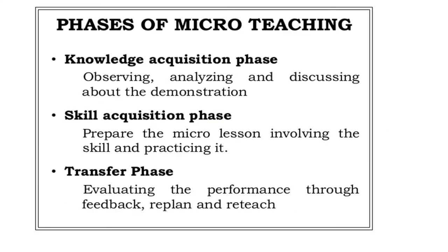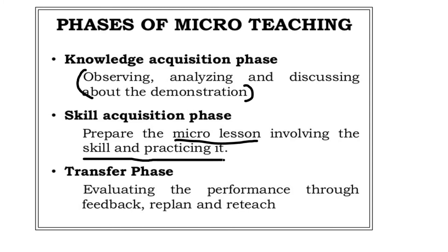Micro teaching has three phases: Knowledge Acquisition Phase, Skill Acquisition Phase, and Transfer Phase. Knowledge Acquisition Phase involves observing, analyzing, and discussing about the demonstration. Skill Acquisition Phase involves preparing the micro lesson, involving the skill and practicing it.